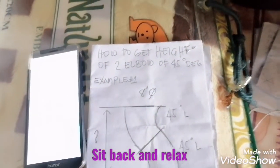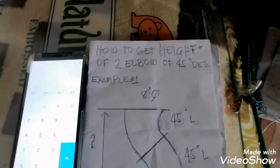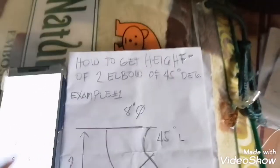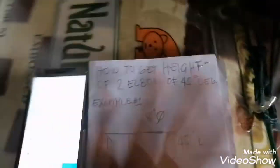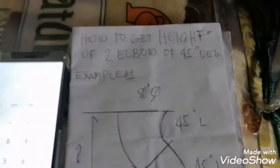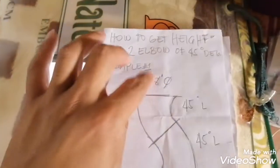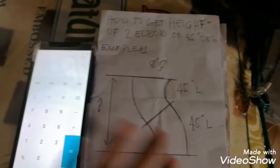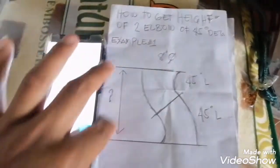Hello guys, I'm back. The topic for today is how to get the height of two elbows at 45 degrees. This is example number one, an 8-inch two elbow 45-degree. How to get the height of this line?